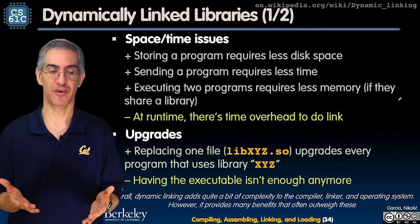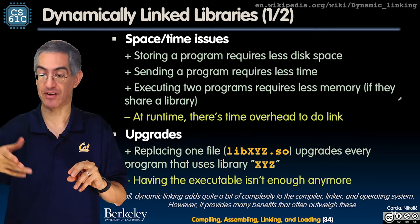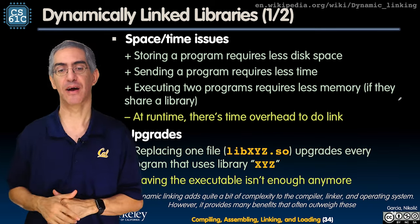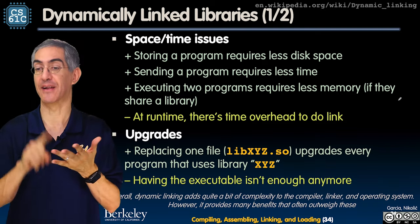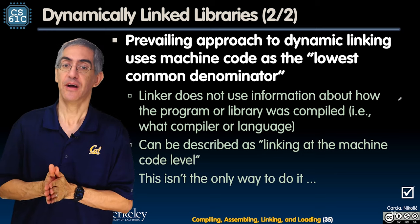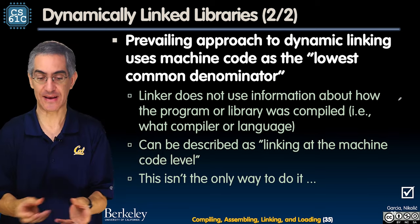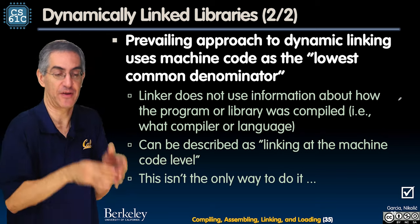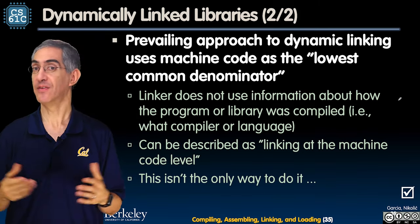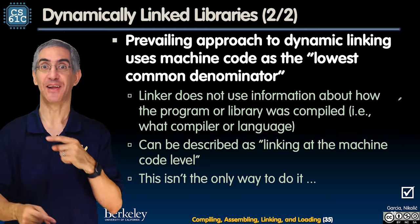So there's a trade-off: static linking is stable and self-contained but big and bloated, whereas dynamic linking gives smaller downloads, free upgrades, and memory sharing but adds runtime overhead and stability risks. Dynamic linking adds significant complexity to the compiler, linker, and OS loader, but many find the benefits outweigh the costs. The prevailing approach is to link at the machine code level — make room for the library, grab it, stuff it in, and run. Next up is the loader — we'll see that in the next lecture.